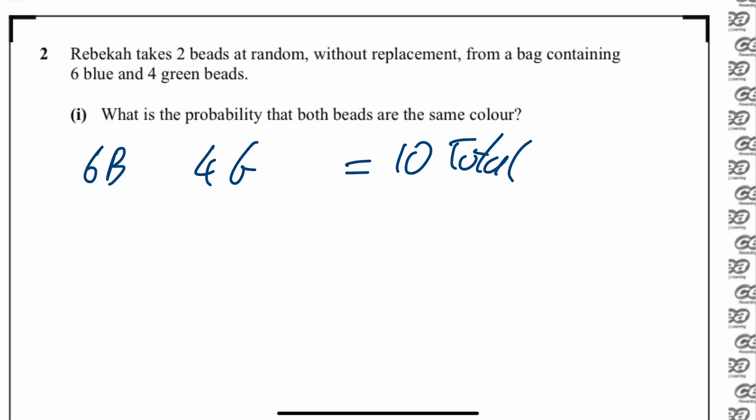What is the probability that both beads are the same colour? First of all, she could pull out a blue, which is 6 out of 10, and then she could pull out another blue. If they're taken at the same time, then that means they're not replaced. So there's one less in total, and also one less blue in total. So that's blue and blue.